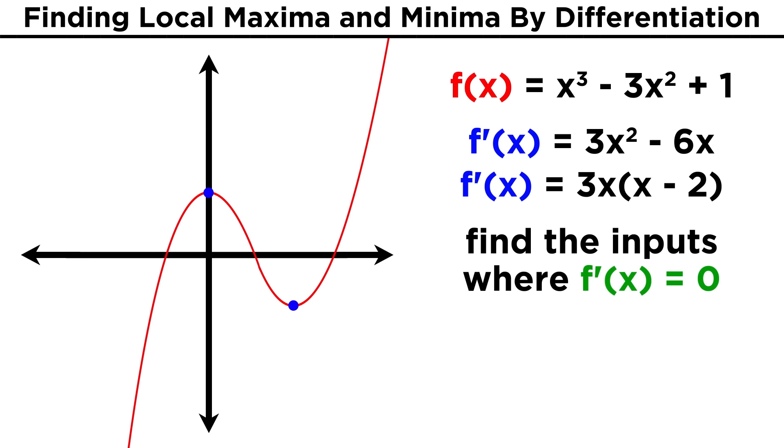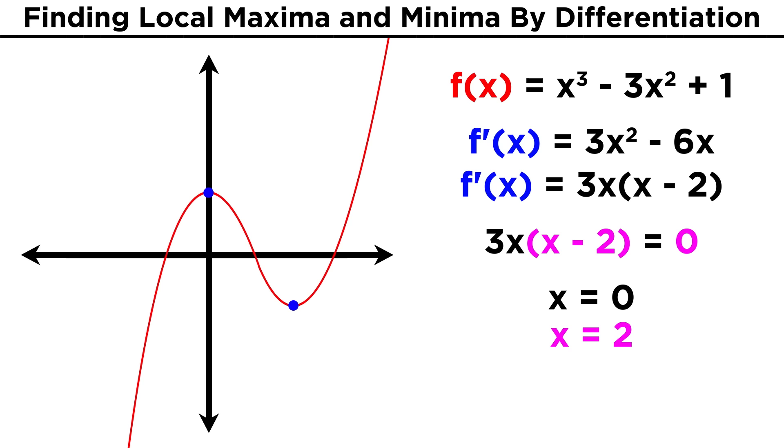Now we want to find the input values for which this derivative equals zero, because those will be the points on the function with horizontal tangent lines. Well this is just basic algebra. If x is zero, f prime is zero. If x is two, f prime is zero. So the local maximum occurs at x equals zero, and the local minimum occurs at x equals two.